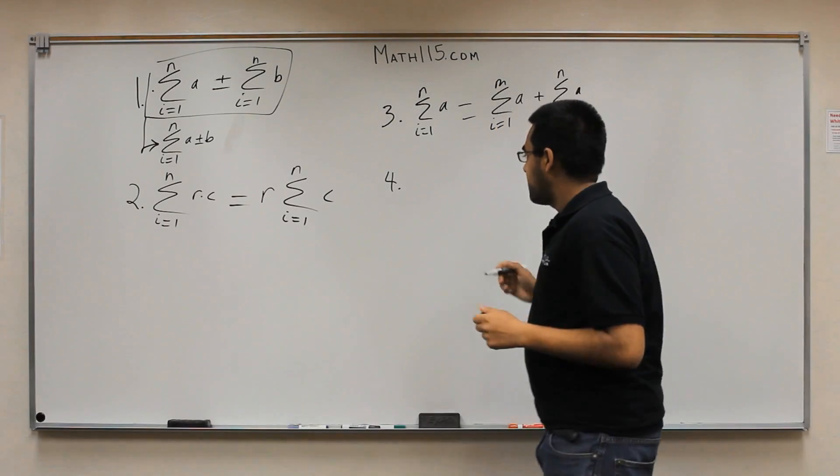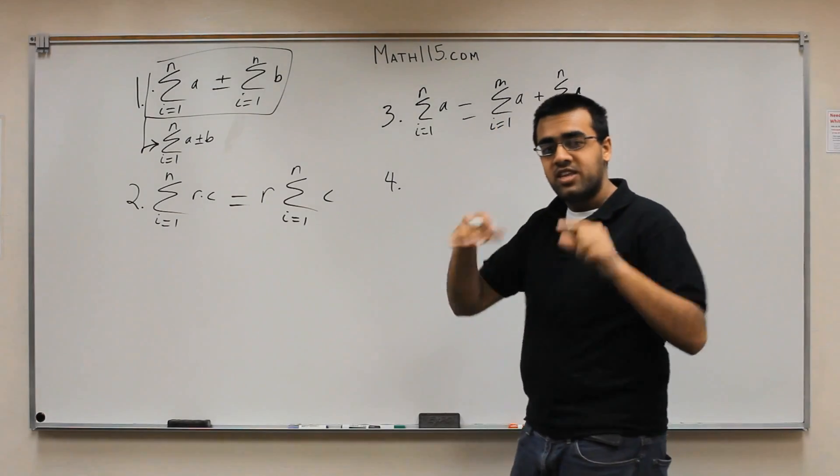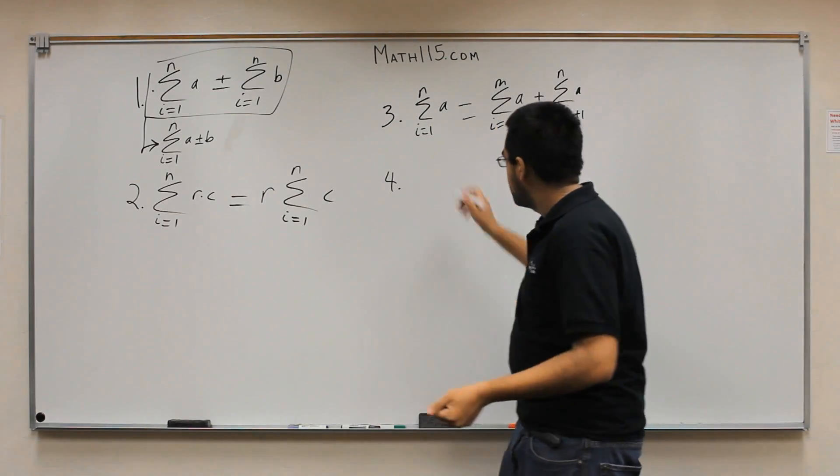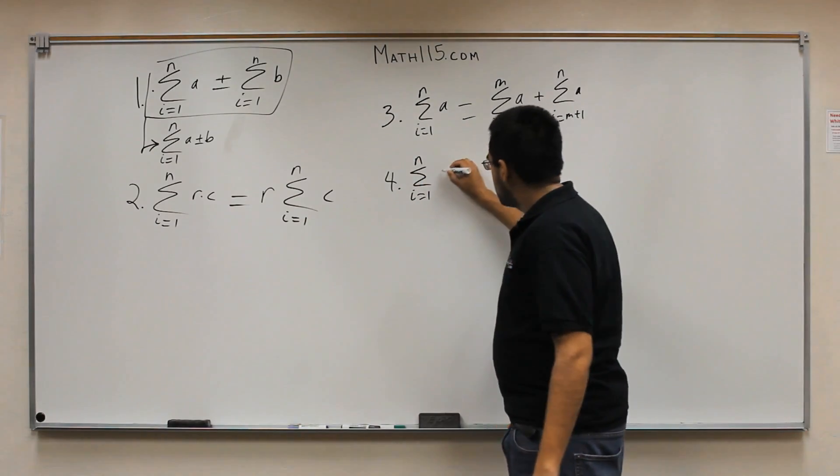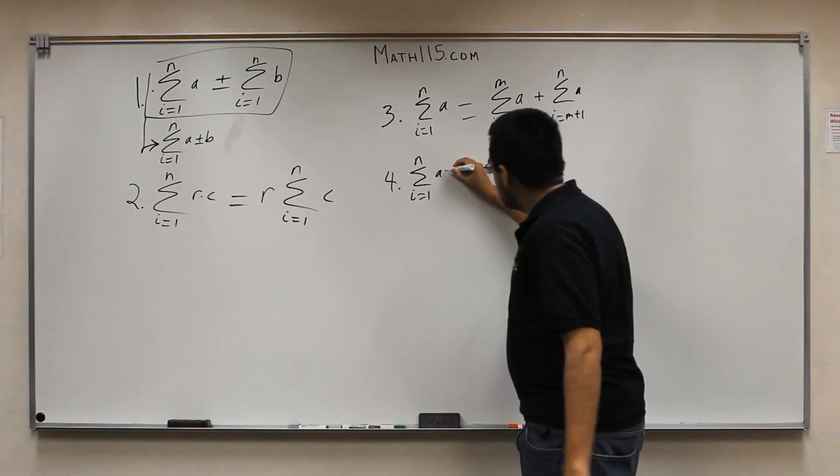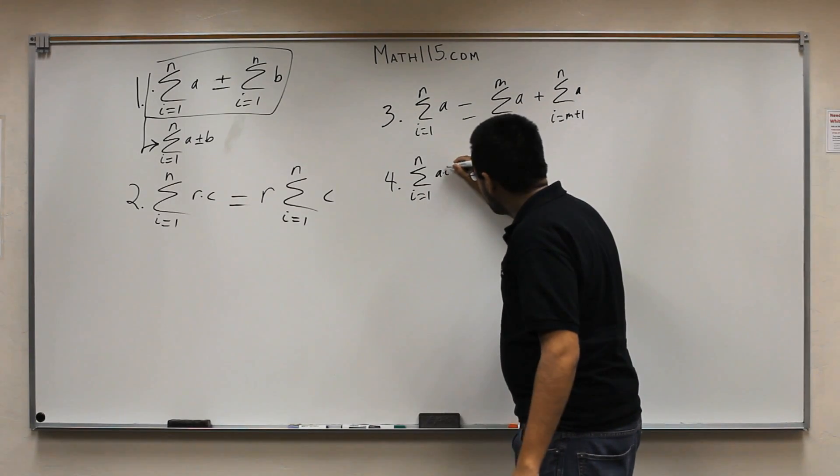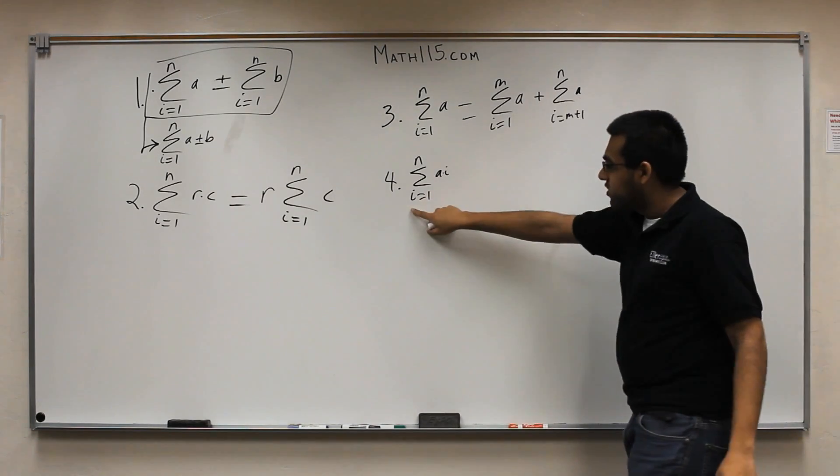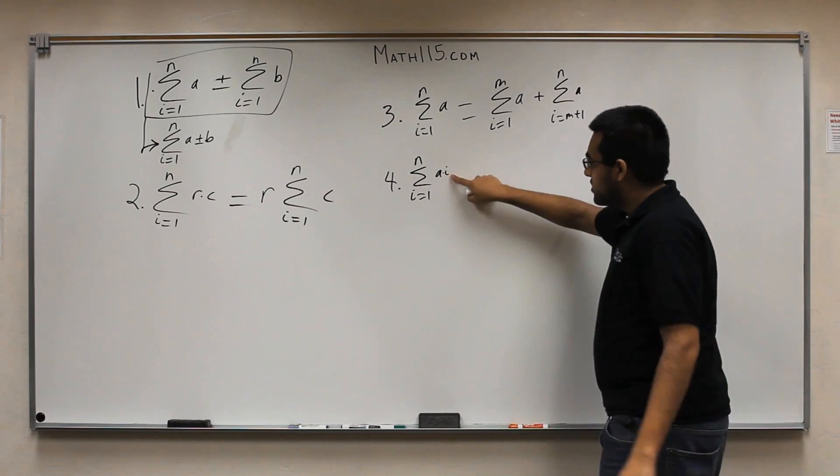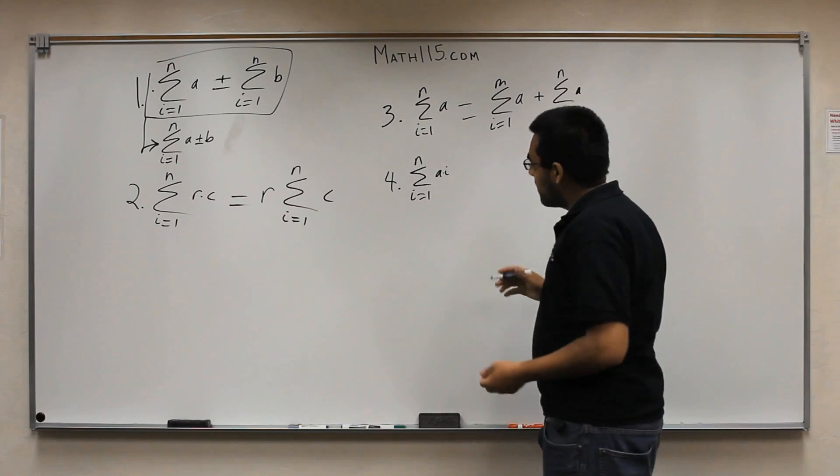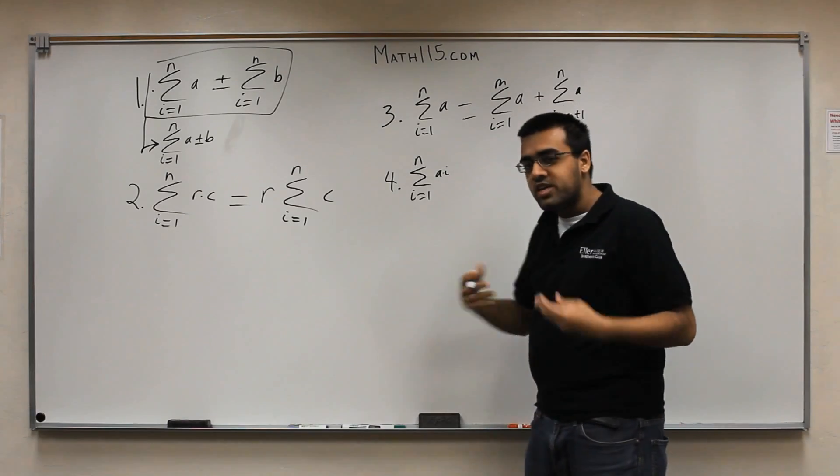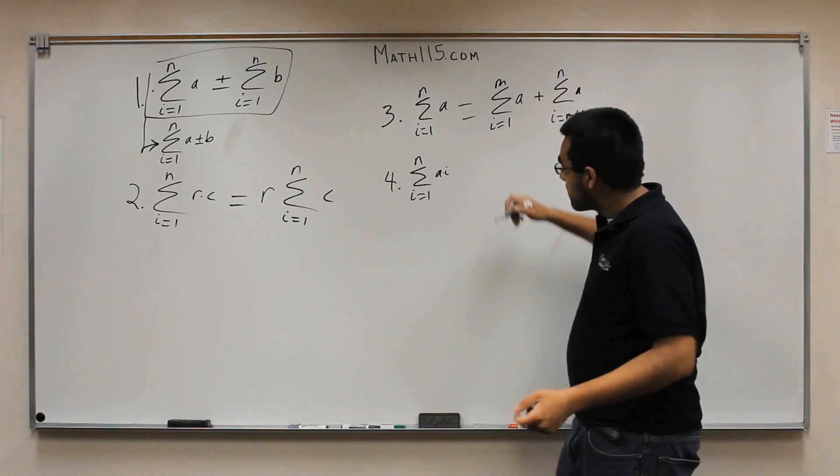So, the last rule has to do with manipulating both the indices and the inside. So, here's how that works. Let's say you have the same situation, i equals 1 to n. And I'm just going to put an a right here, a times i. So, i is our variable in this case. So, i is the variable, a is just some constant. And n is our end point. So, now, what I wanted to do was, let's say I wanted to re-index. This is something you probably got over in class.